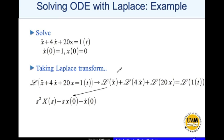We have a theorem for Laplace transform of a derivative. We directly apply that here. Laplace transform x double dot will end up being s squared times capital X of s minus s x of 0 minus x dot of 0.